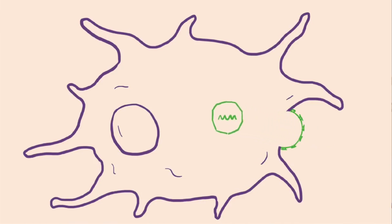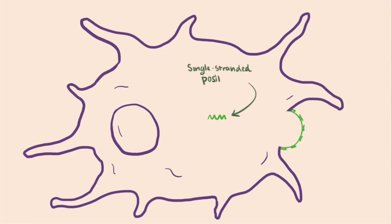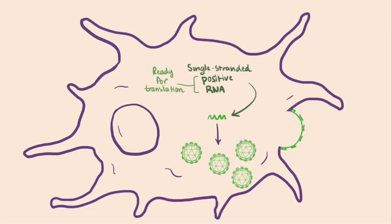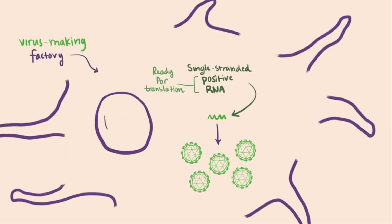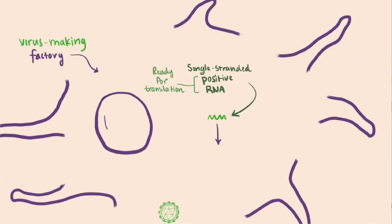We still don't know everything about the Zika virus infection, but we do know that when it enters the cell, it injects a single-stranded positive RNA strand. Positive means that this piece of RNA is a lot like our own mRNA — it's basically ready to get translated into proteins. The virus's genome is translated by our own cellular machinery into more viruses. Eventually those cells-turned-virus-making-factories die, which ends up releasing more viruses to infect more cells.